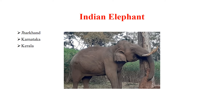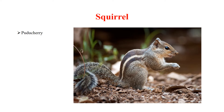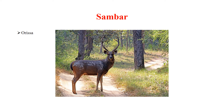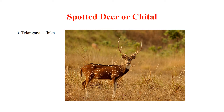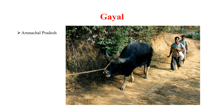Indian Elephant is the state animal of Jharkhand, Karnataka, and Kerala. Indian Giant Squirrel is the state animal of Maharashtra. Gayal is the state animal of Arunachal Pradesh.